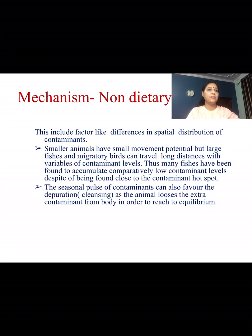Non-dietary mechanisms include factors like differences in spatial distribution of contaminants. Smaller animals have small movement potential, but large fishes and migratory birds can travel long distances with variable contaminant levels. Thus, many fishes have been found to accumulate comparatively low contaminant levels despite being found close to contaminant hotspots. Seasonal pulses of contaminants can also favour depuration, as the animal loses extra contaminant from the body to reach equilibrium.